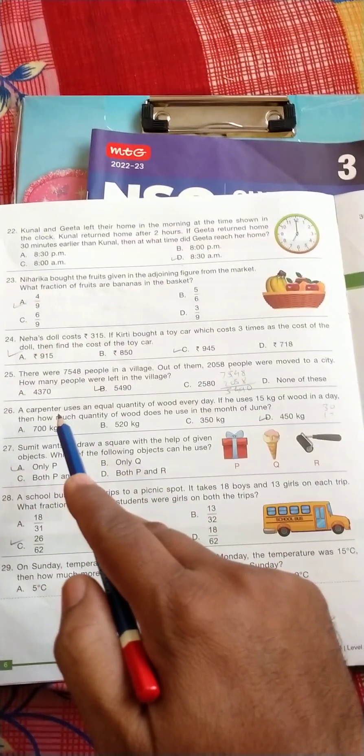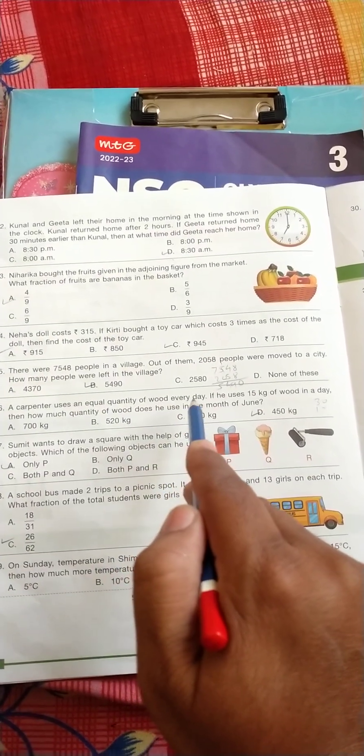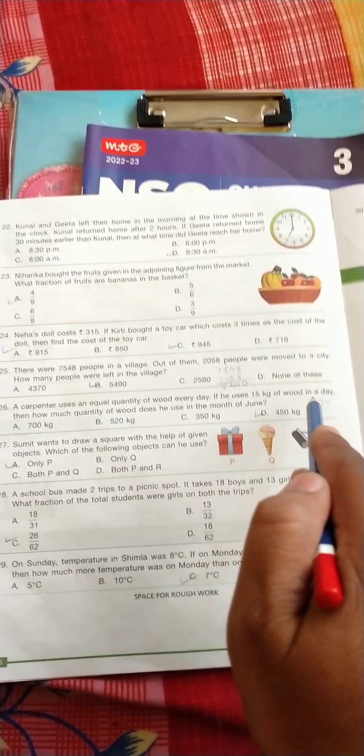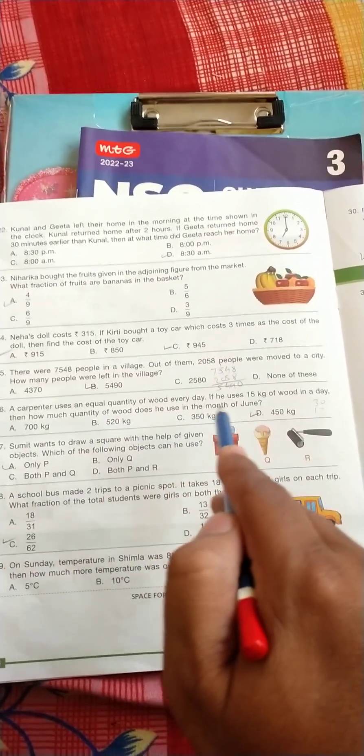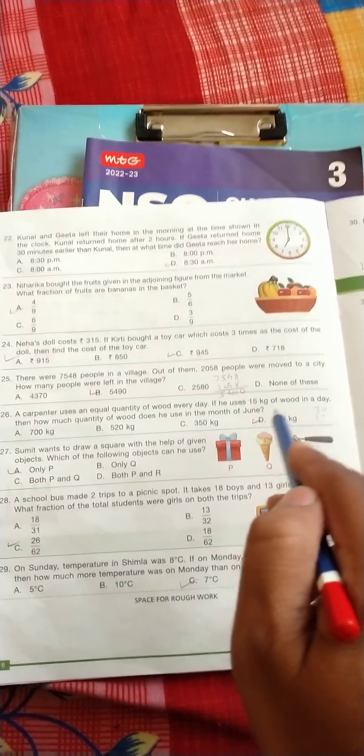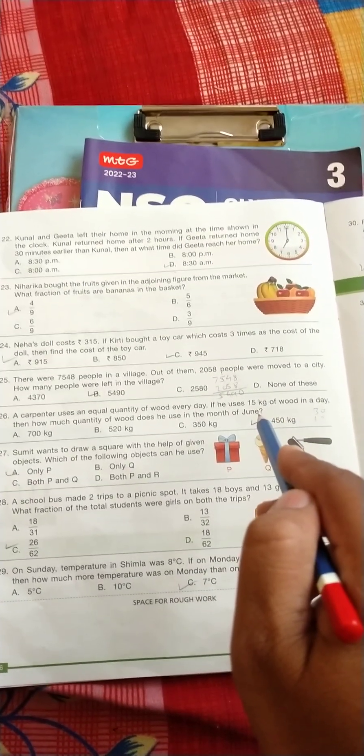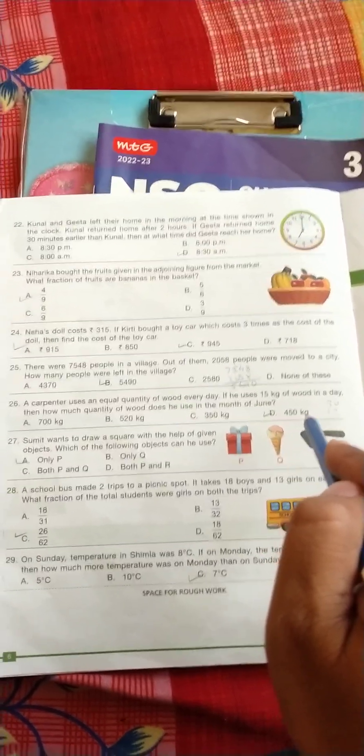Question number 26: a carpenter uses an equal quantity of wood everyday. If he use 15 kg of wood in a day, then how much quantity of wood does he use in the month of June? So the month of June is 30 days, so just multiply 30 into 15. So the answer is D, 450 kg.